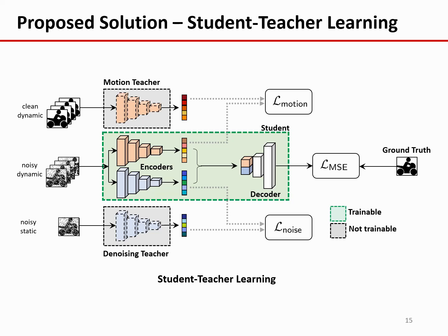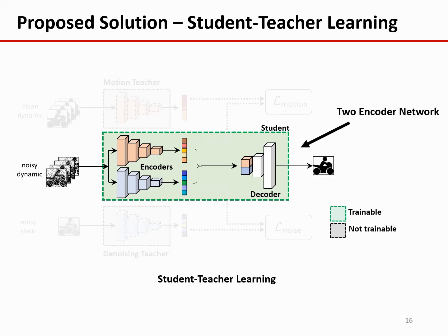The motion teacher based on kernel prediction is pre-trained using clean and dynamic image sequences. The denoising teacher based on image denoiser network is pre-trained on noisy and static image sequences. These two teachers are fixed when we train a student, so they are marked as not trainable in this framework. Our goal is to train a student network by transferring knowledge from the teachers to the student. This student network has two encoders. Given noisy and dynamic image sequences, we want the two encoders to extract two sets of features: the motion features and the denoising features. Having these two sets of features, the decoder of the student network will be able to reconstruct the clean images.